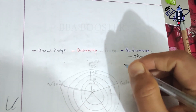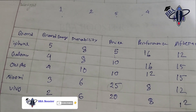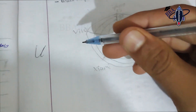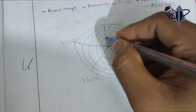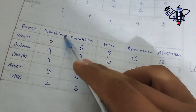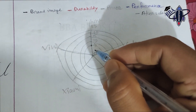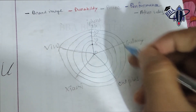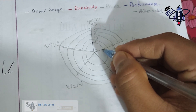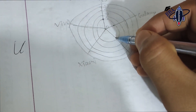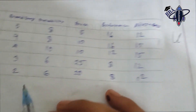For brand image: iPhone scored 5, Galaxy scored around 4 to 5. For OnePlus, the brand image score is lower — around 4. For Xiaomi it was around 3, and for Vivo around 3 as well. These represent consumer perceptions of brand image for each company.